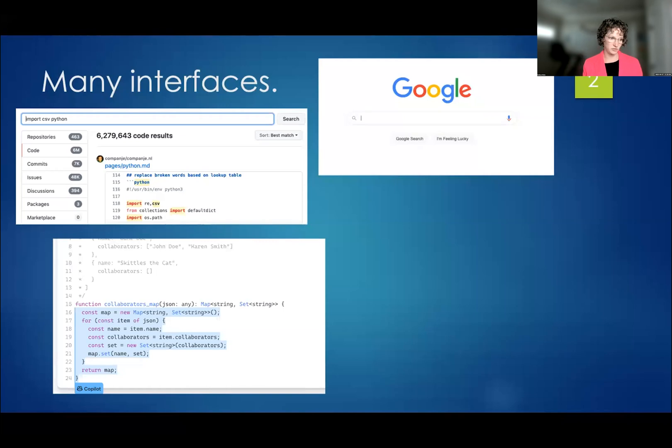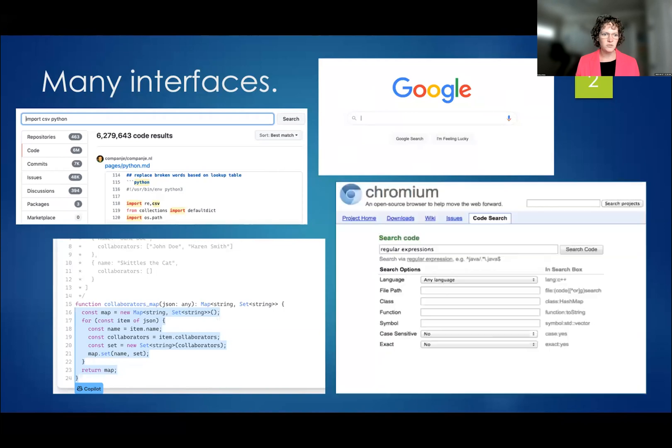Or this is GitHub's co-pilot, or a little bit of code-to-code search here. And then there's also a lot of interfaces that are within IDEs, within specific companies. This is one that is similar to a Google code search tool that existed several years back.